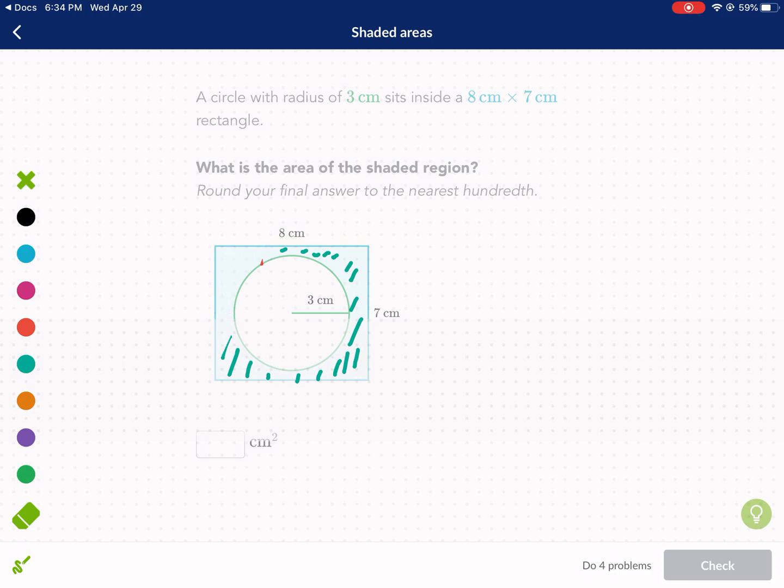The key to finding the area of a shaded region in geometry is taking the big area, so the area of the large region, you subtract the area of the unwanted region. So let's call it U. And then you'll get the area. Oh, I got a better idea. We'll call it NS for not shaded. And then you get the area of the shaded region.